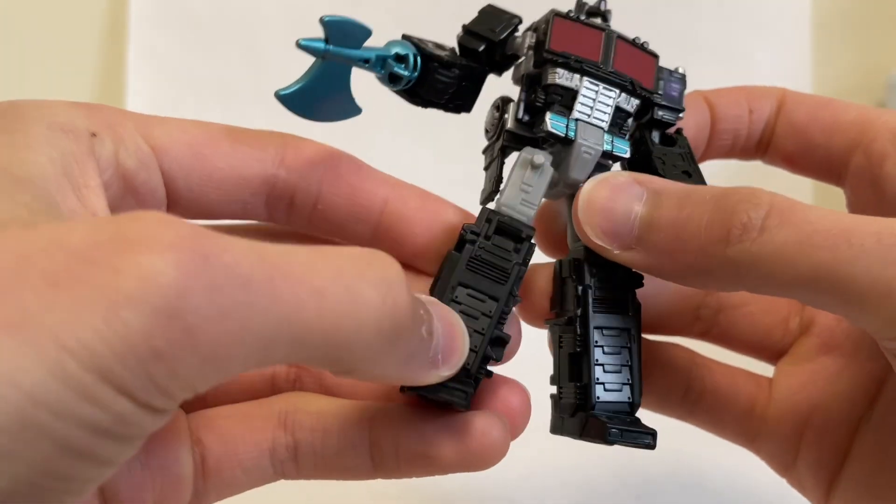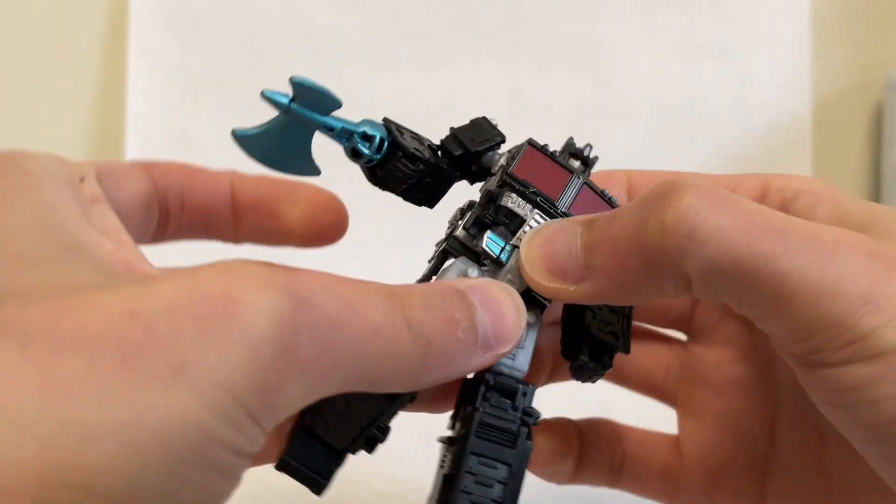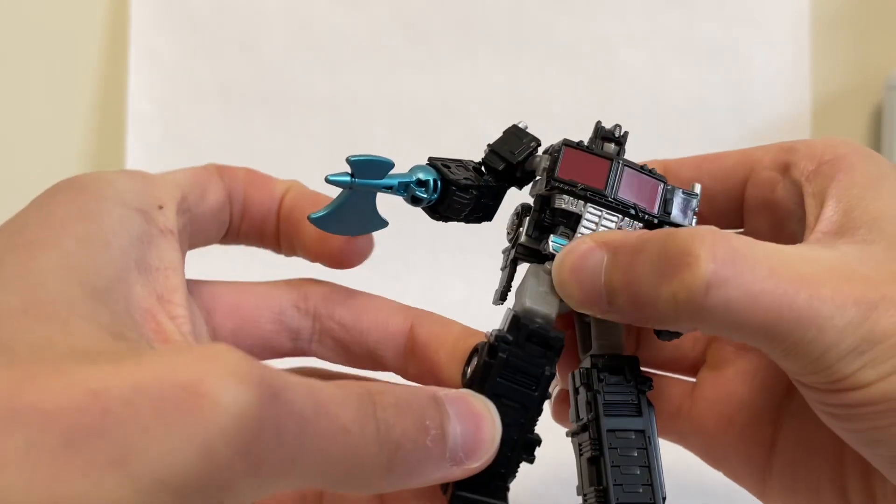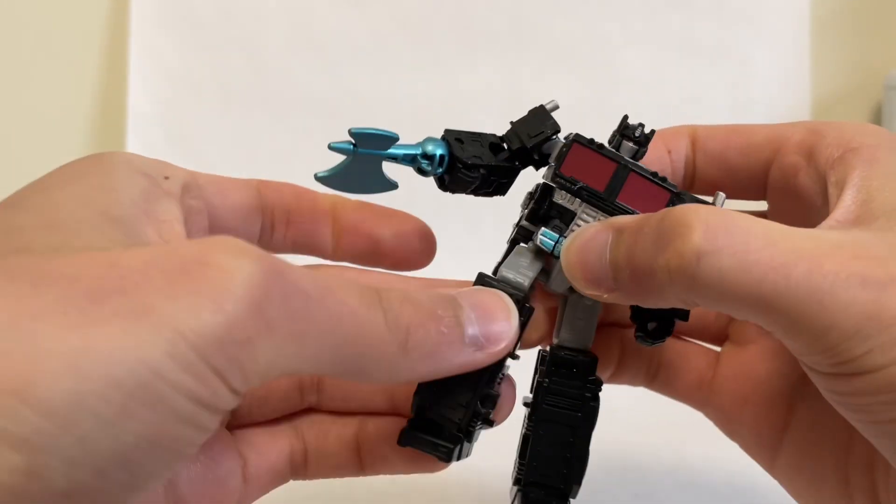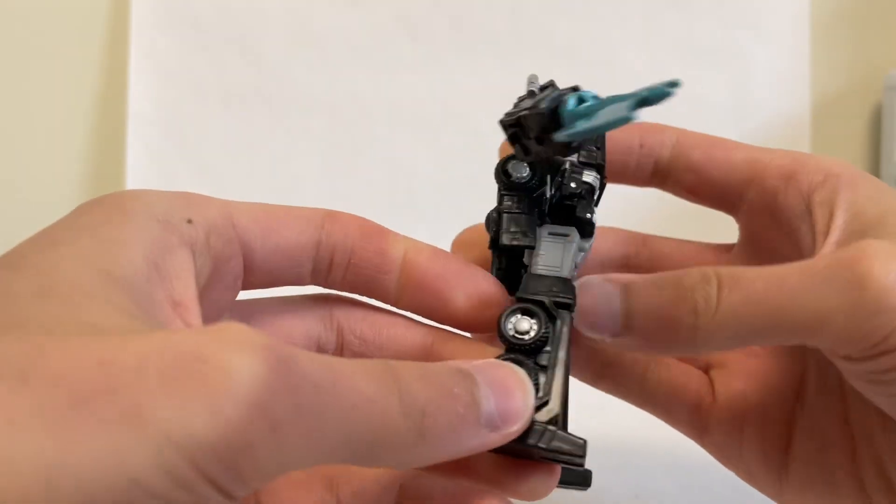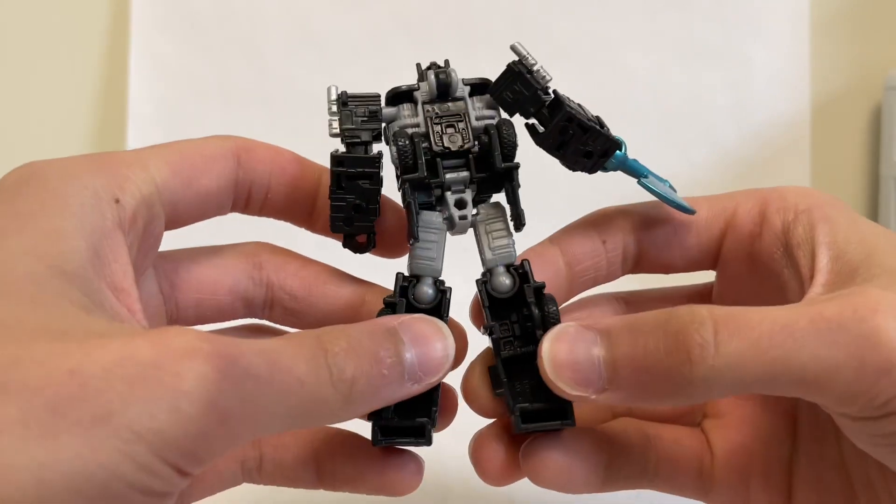Now there's no silver paint down here, which is on the standard Optimus Prime, but I would have liked to see that on this guy too, but it still works. I mean, it does make his legs look like big black blocks, but the silver on the wheels does help with that as well.